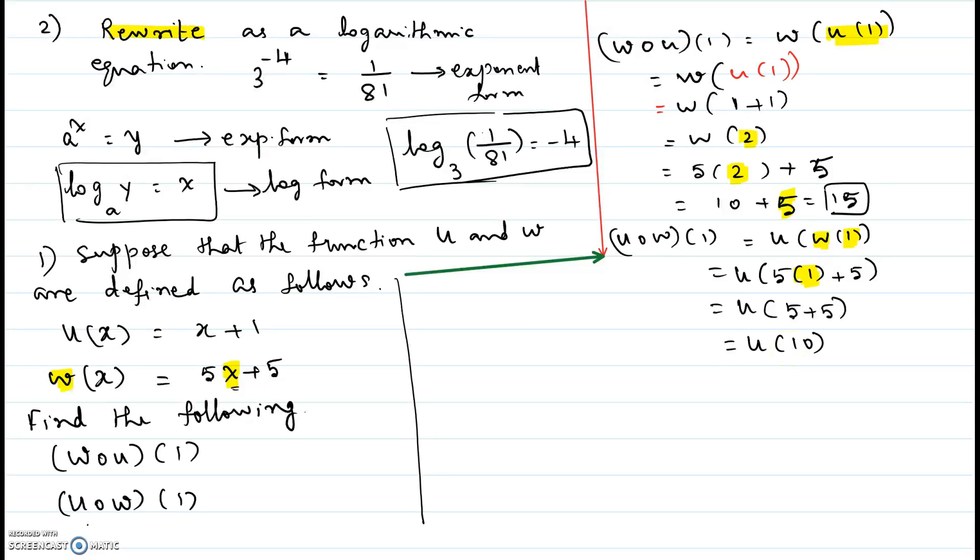Now you have to take the u function which is given as u of x equal to x plus 1. In that you change the input to 10 or x to 10. So we get x plus 1 where x replaced by 10.